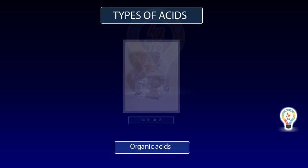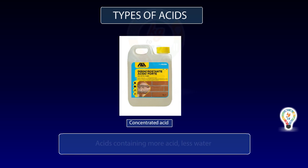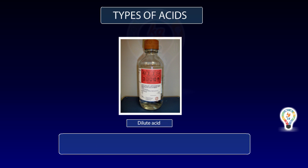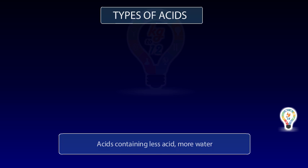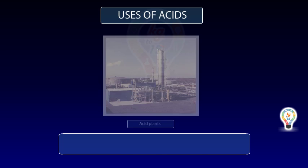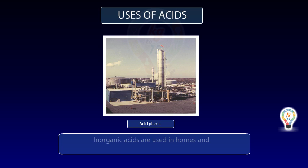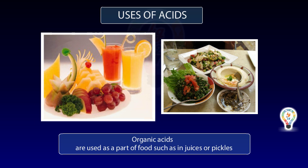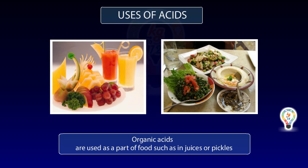Types of acids. Mineral acids: hydrochloric acid, sulfuric acid, and nitric acid. Organic acids: citric acid, acetic acid, and lactic acid.